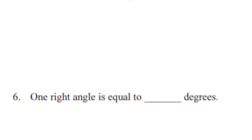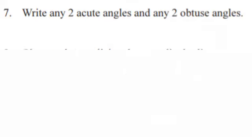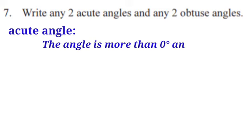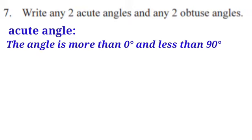Problem six: one right angle is equal to 90 degrees. Problem seven: write any two acute angles and any two obtuse angles. Acute angle is an angle more than 0 degrees and less than 90 degrees. Examples: 30 degrees and 40 degrees are acute angles.